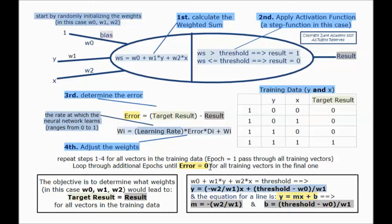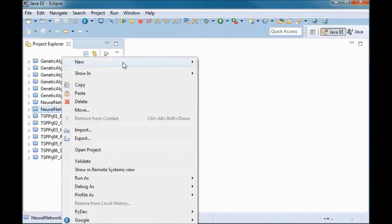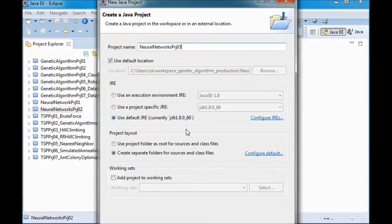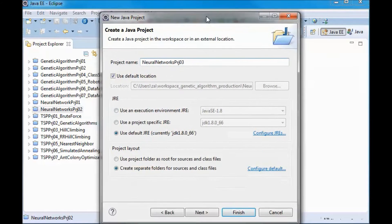We set ws equal to the threshold, so w0 plus w1 times y plus w2 times x equals the threshold. This gives the line equation where m equals minus w2 over w1 and b equals the threshold minus w0 over w1. To implement this, we'll start by creating a new project.